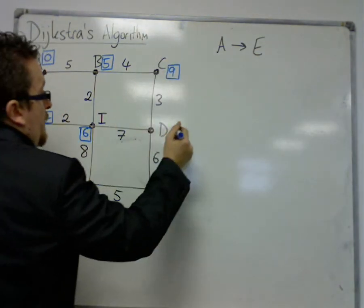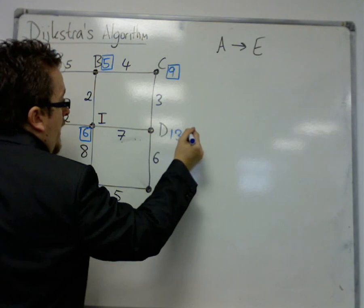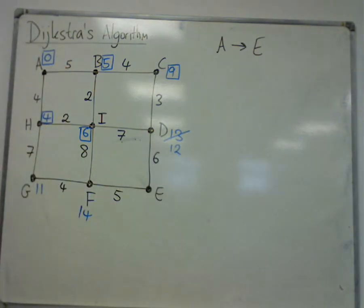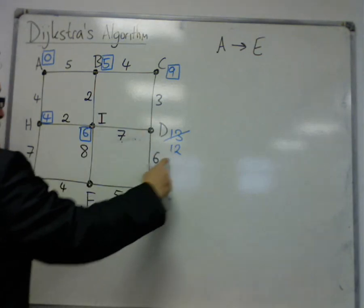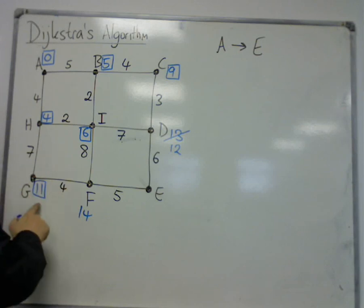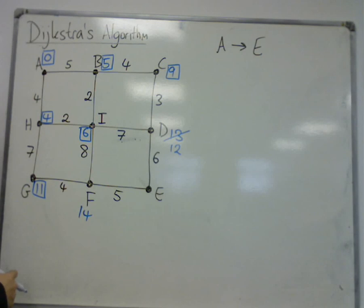Well, 9 and 3 is 12, which is better than 13. So a single line through the 13 and write 12 instead. Okay? Then the next least out of 12, 14, and 11 is 11. 11 and 4 is 15, which isn't better than 14, so I don't bother writing anything down.